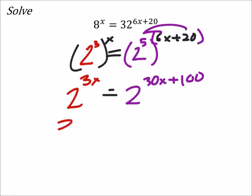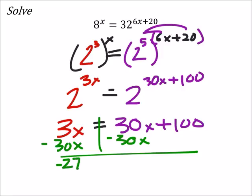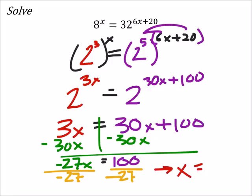And that means I can just change this to be the exponents being equal. So 3x equals 30x plus 100. And from here, I would subtract 30x from both sides. So negative 27x equals 100. And then divide by negative 27.